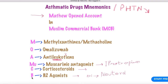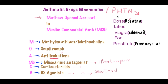Then 'bank' gives us B for beta-2 agonists. They always end in '-ol' — for example, albuterol and salmeterol. Don't confuse them with beta blockers, which also end in '-ol.' Beta-2 agonists end in '-ol' as well, so be careful.